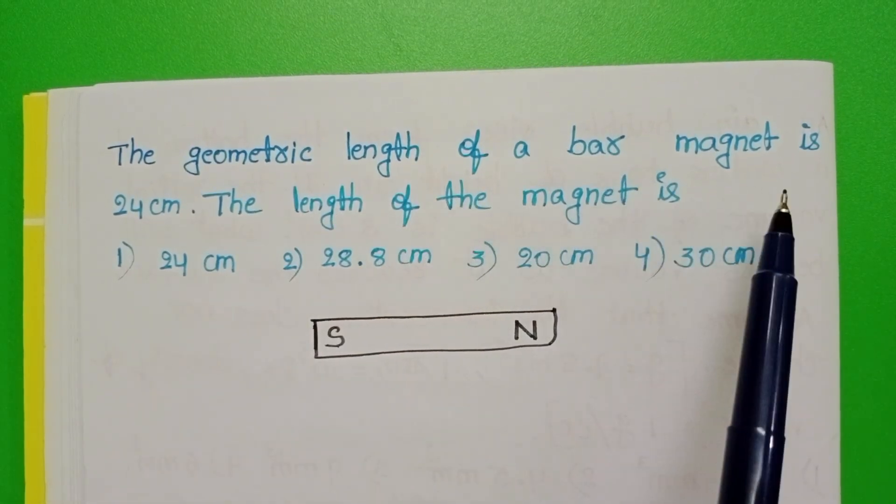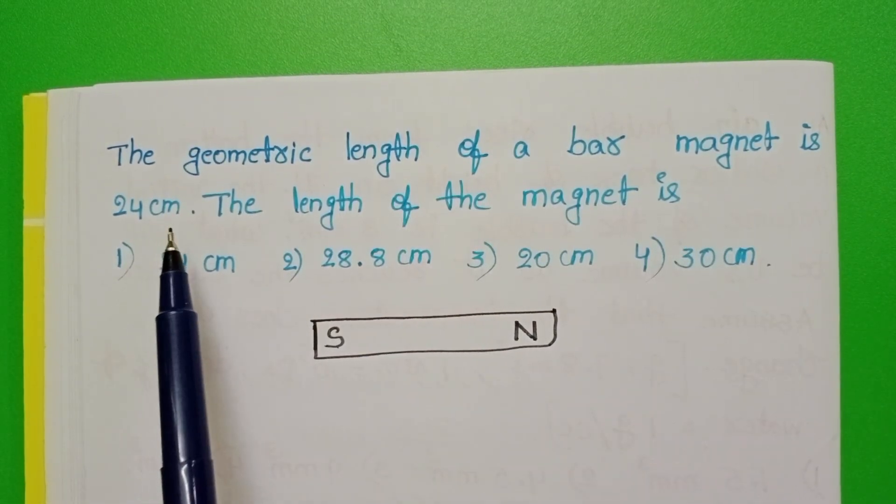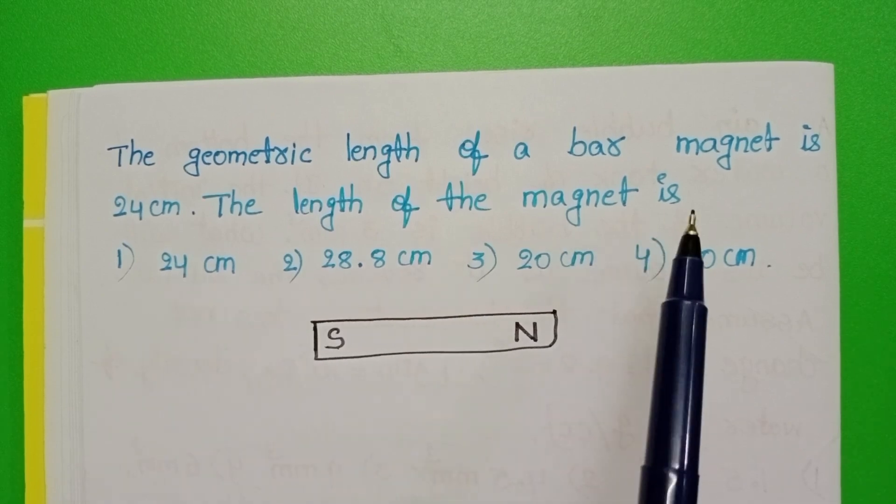The geometric length of a bar magnet is 24 cm. The length of the magnet is: